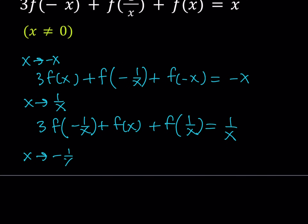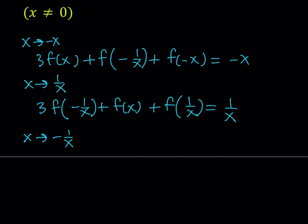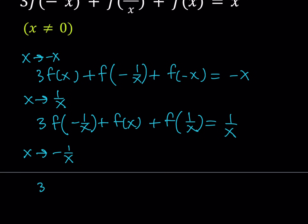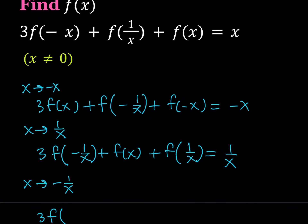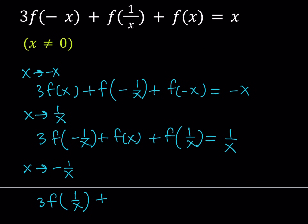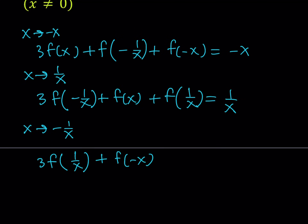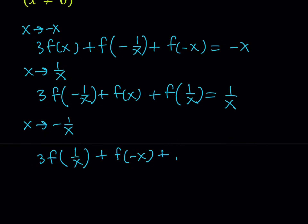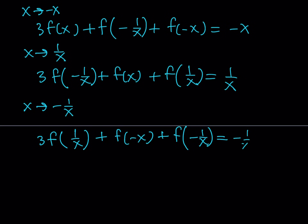The third substitution I'm going to use is replacing x with negative 1 over x. Notice this makes sense because I already have f of x, f of negative 1 over x, and f of negative x. To handle f of negative 1 over x, I replace x with negative 1 over x, giving me: 3 times f of 1 over x, plus f of negative x, plus f of negative 1 over x, equals negative 1 over x.